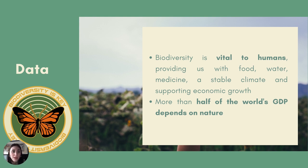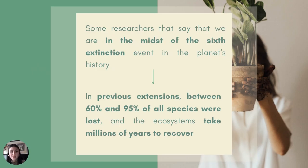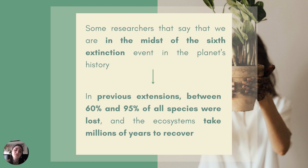As a result, more than half of the world's gross domestic product depends on nature. But in recent years, plant and animal species have been disappearing at an alarming rate. There are even some researchers who say that we are in the midst of the sixth extinction event in the planet's history. We have to bear in mind that in previous extinctions, between 60% and 95% of all species were lost, and the ecosystem takes millions of years to recover.